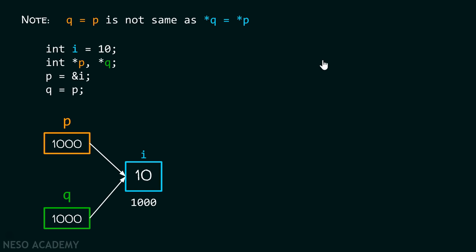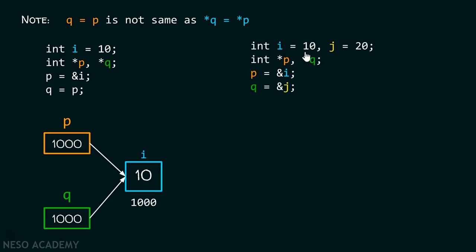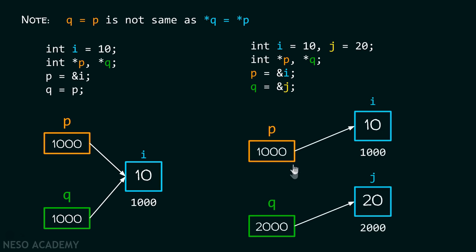But what happens if we have these two variables i and j, which are initialized with different values, and p and q are pointers pointing to different memory locations. p contains the address of i and q contains the address of j. Here is the pictorial representation of pointers p and q and variables i and j. i contains value 10 and j contains value 20. They are different variables, therefore they acquire different memory locations.